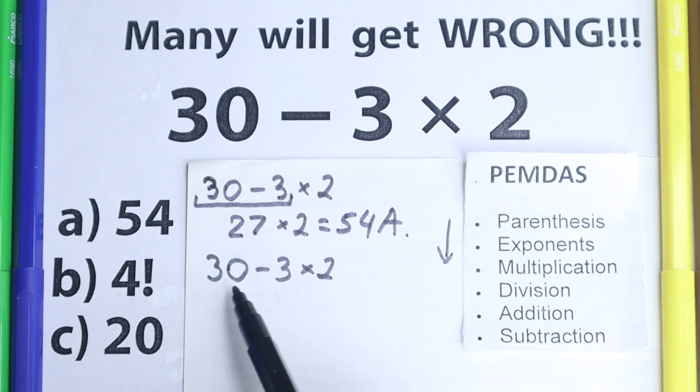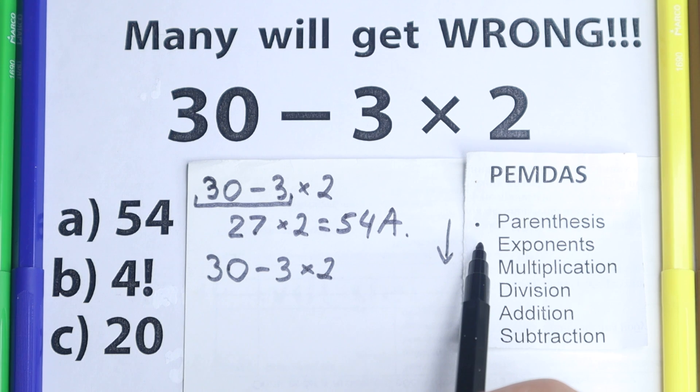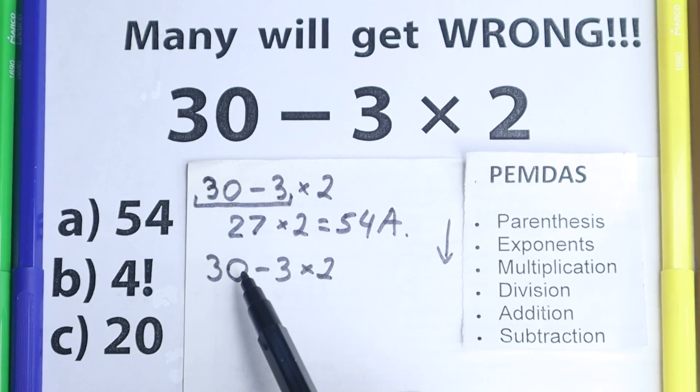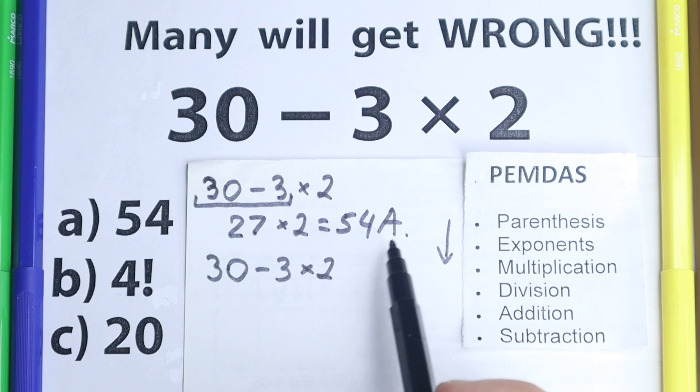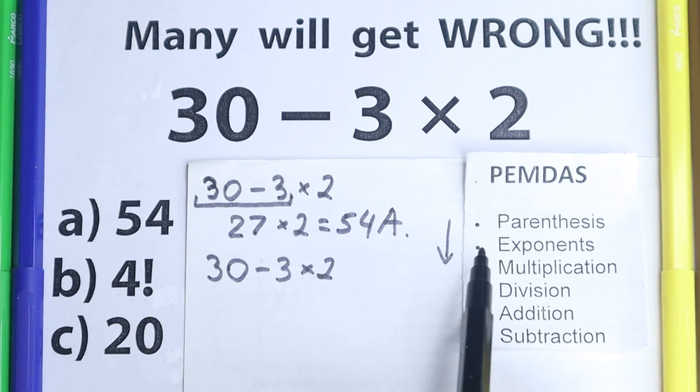The first step according to PEMDAS, this is parentheses, and let's look at it. Are there any parentheses right here? No, I don't see any of those. Let's go to the next step. Are there any exponents right here? No, I don't see any of those. So let's go to the next step, we just skip these two parts.